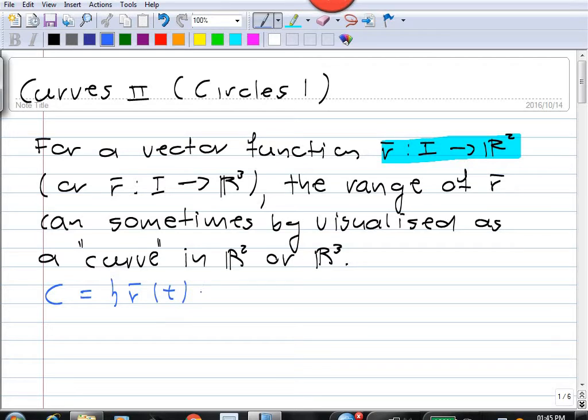So it's all the possible values of the vector function r with t in our interval I, and this gives us a curve in R². Although that's the idea, sometimes C doesn't look anything like a curve,